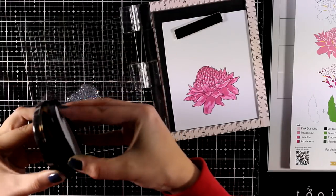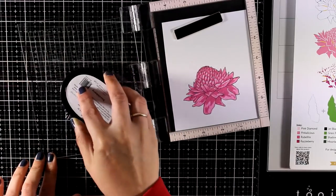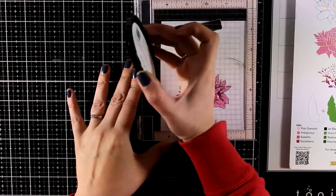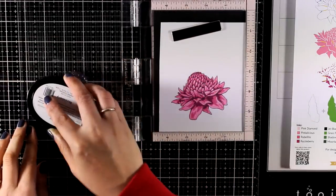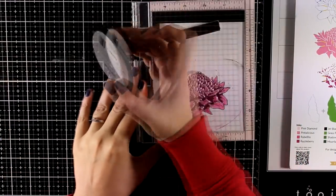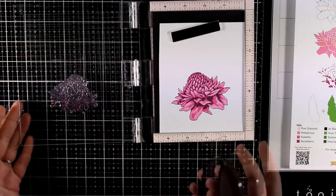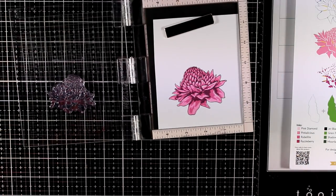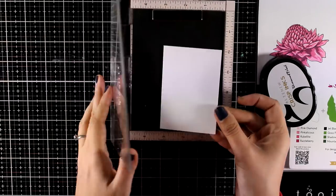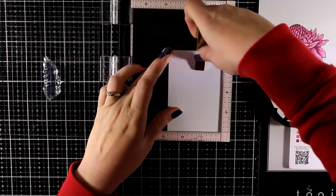Since I believe that shadows really bring images to life, I'm going to stamp it a couple of times to get a deeper color. The last and final layer is raspberry. Again, I'll stamp this a couple of times for an even deeper color. You can see how these shadows really bring this flower to life—it looks dimensional.